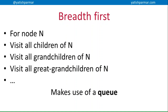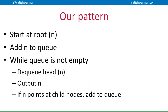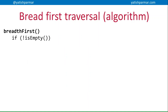This is really straightforward. We start at the root node N and add it to the queue. Then, while our queue is not empty, we dequeue the head of the queue, output that node N, and if N has any child nodes we add them to the queue. We keep adding children to the queue and outputting them as we go along.